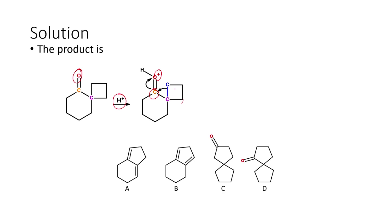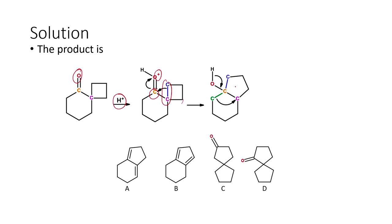The reason for ring expansion is nothing but they will reduce the strain — that is the driving force for the ring expansion reaction. Here we have a four-membered ring, so one of the sigma-bonded electrons will be transferred to the carbon which is going to become electron-deficient, because of the oxygen pulling one of the double-bonded electrons towards itself. So the ring opens up and we have a five-membered ring forming.